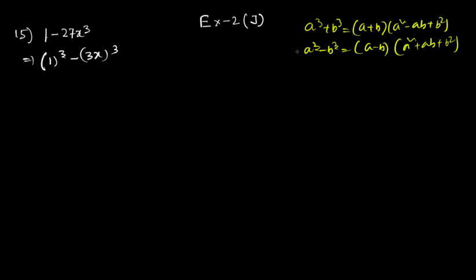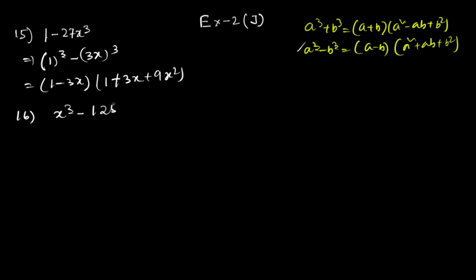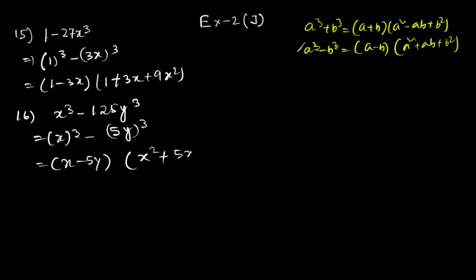Question 15: 1³ – (3x)³, so we use the a³ – b³ formula: (a – b)(a² + ab + b²). Question 16: x³ – 125y³ = x³ – (5y)³, which gives (x – 5y)(x² + 5xy + 25y²).